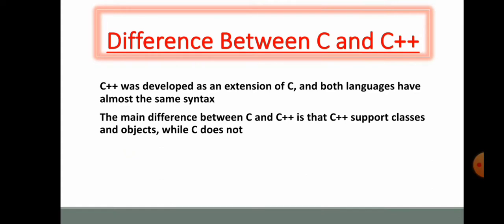What is the basic difference between C and C++? C++ itself is an extension or upgraded version of C. Both languages have almost the same syntax, but the main difference between C and C++ is that C++ supports classes and objects while C does not.